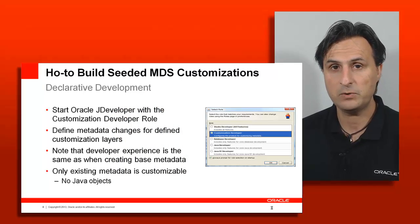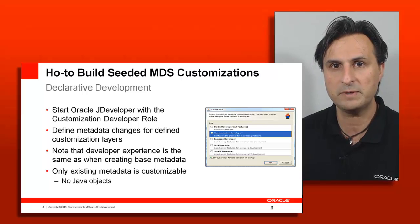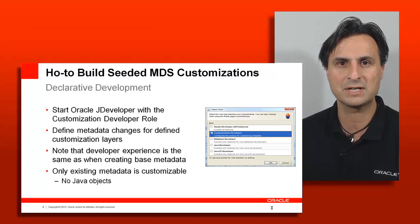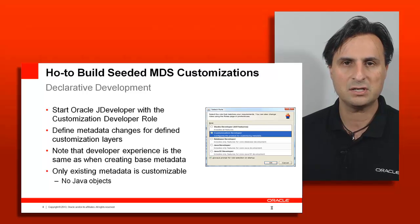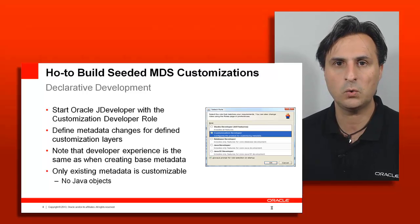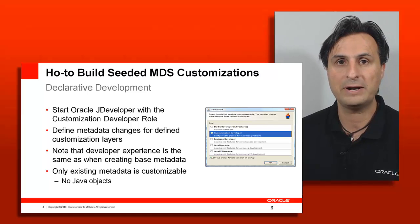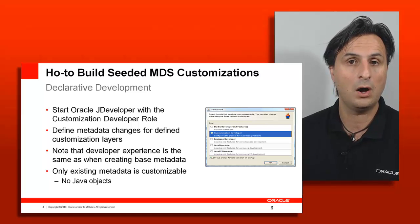When developing customizable applications, you use the customization developer role in JDeveloper. When you start JDeveloper, a dialog asks which role you want. The customization developer role starts JDeveloper looking exactly as you know it from base application development. The difference is that all files that are not metadata files are locked — only projects configured with customization enabled are editable, which you set on the project under ADF View by checking 'enable seeded customization with MDS'.